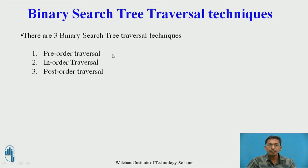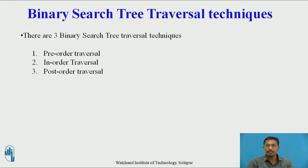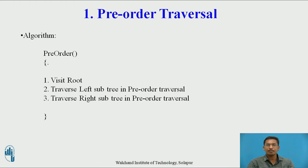Now we will see how to traverse the given binary search tree. Traversal means to visit all the nodes present in the given binary search tree. There are three binary search tree traversal techniques: the first one is pre-order, the second is in-order, and the third is post-order. We will see them one by one.